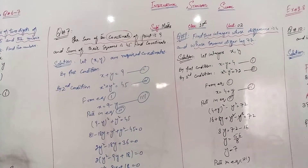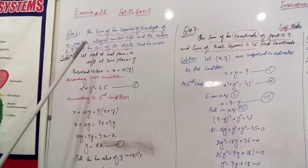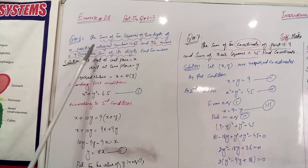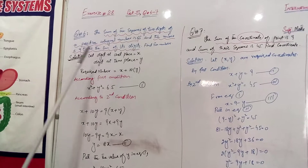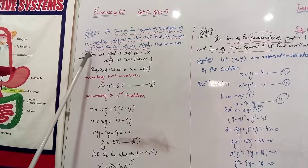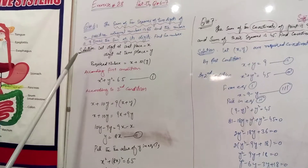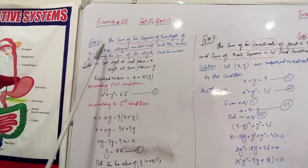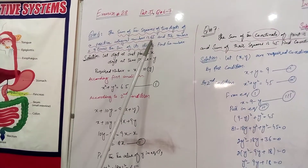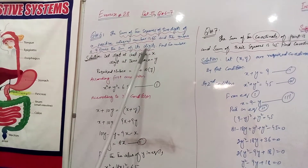Assalamu alaikum dear students. Today we will discuss Mathematics Class 10, Exercise 2.8, Part 2, Question Number 6 and 7. Question number 6: the sum of the squares of 2 digits of a positive integral number is 65, and the number is 9 times the sum of its digits. Find the number.